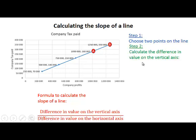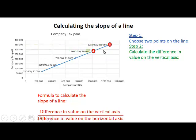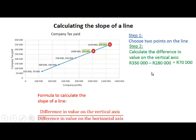Now we calculate the difference in value on the vertical axis. At point A, the value of company tax paid is 280,000, and at point B it is 350,000. So the difference on the vertical axis between those points is 350,000 minus 280,000, which equals 70,000.